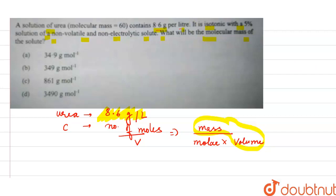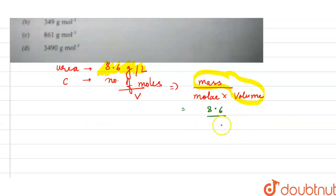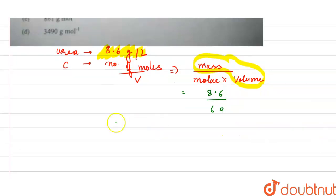So I can write this value as 8.6. What is the molar mass of the urea? It is given to us 60, so it is 8.6 upon 60. So what would be the osmotic pressure of urea? It would be equal to CRT and C value is 8.6 divided by 60 into RT.